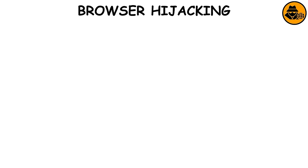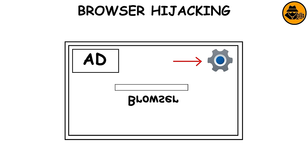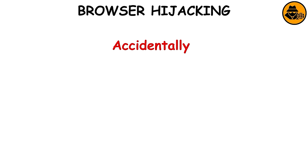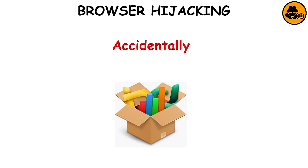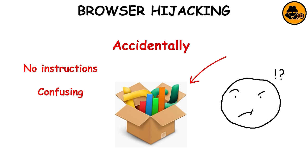Browser Hijacking. It's unwanted software that changes a web browser's settings without a user's permission to inject unwanted ads, change the homepage, or even replace the search engine entirely by installing its own. Many browser hijacking programs are accidentally installed while installing other software that bundles them in their installer, and they often come without uninstall instructions or are presented in a confusing way designed to trick the average user into installing unwanted extra software.